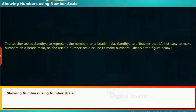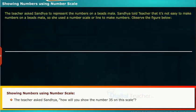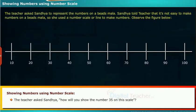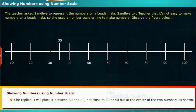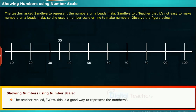Let us see the explanation on showing numbers using a number scale. The teacher asked Sandhya how she would show the number 35 on the scale. She replied she would place it between 30 and 40, not close to 30 or 40, but at the center of the two numbers. The teacher replied that this is a good way to represent numbers.